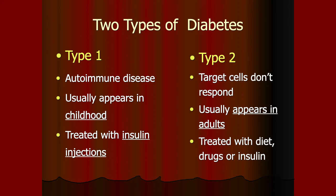Specific things about the endocrine system will be based on what you see in the packet. I won't ask anything outside of what the packet covers — particularly which endocrine glands and which hormones you need to know.